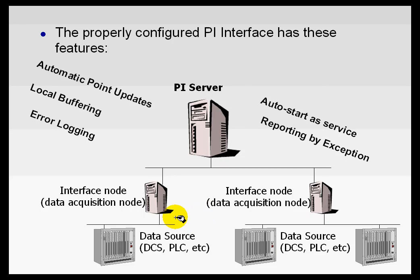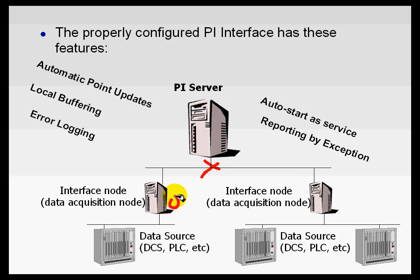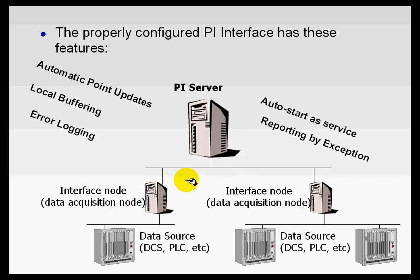What we're talking about is a data source in the field that we need to collect data from. The data is going toward the PI Server by means of an interface node, and running on that interface node is an application called the interface. If you were to disconnect it from the network, should the interface keep trying to connect to the data source? Yes, it should. Also, should it be able to buffer the data automatically if that connection should fail? Yes, we think it should buffer the data automatically.